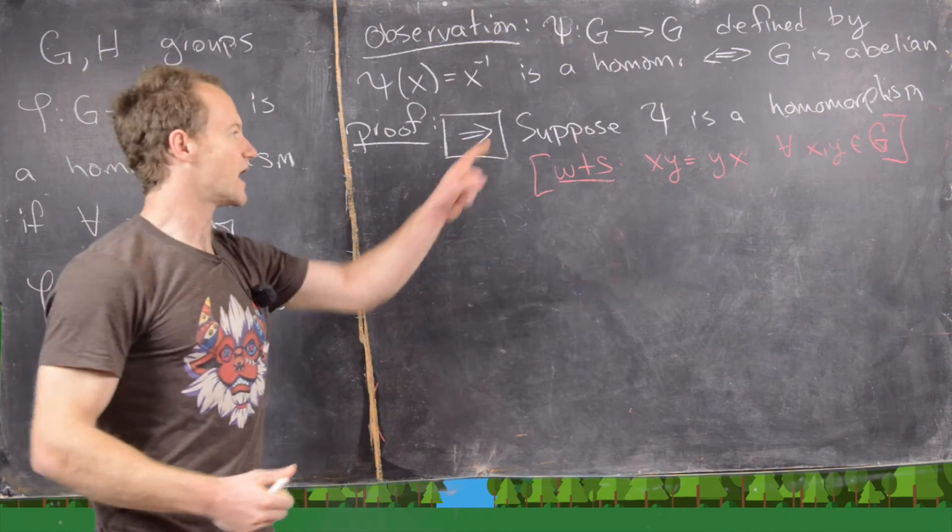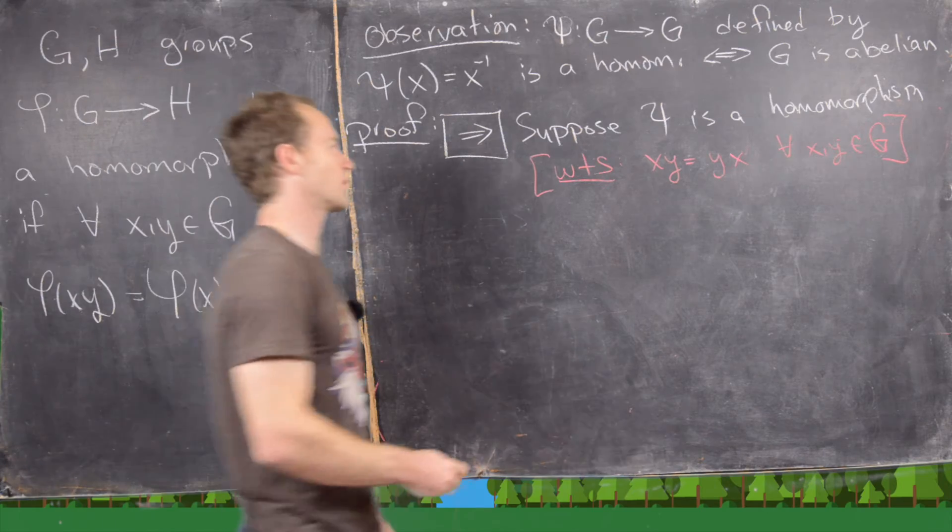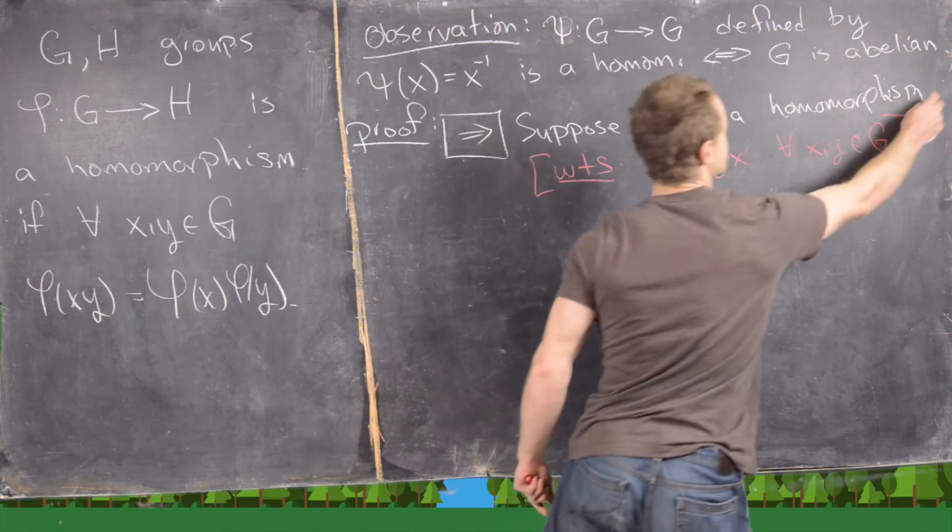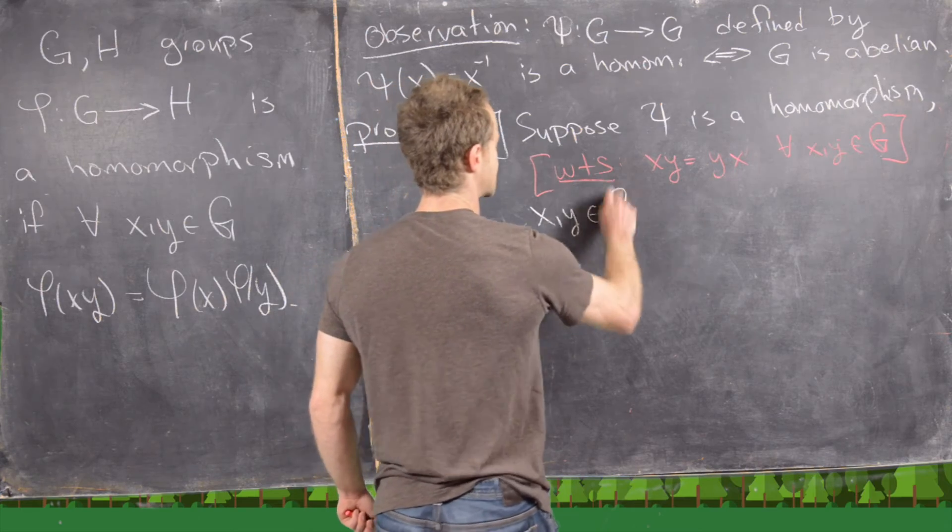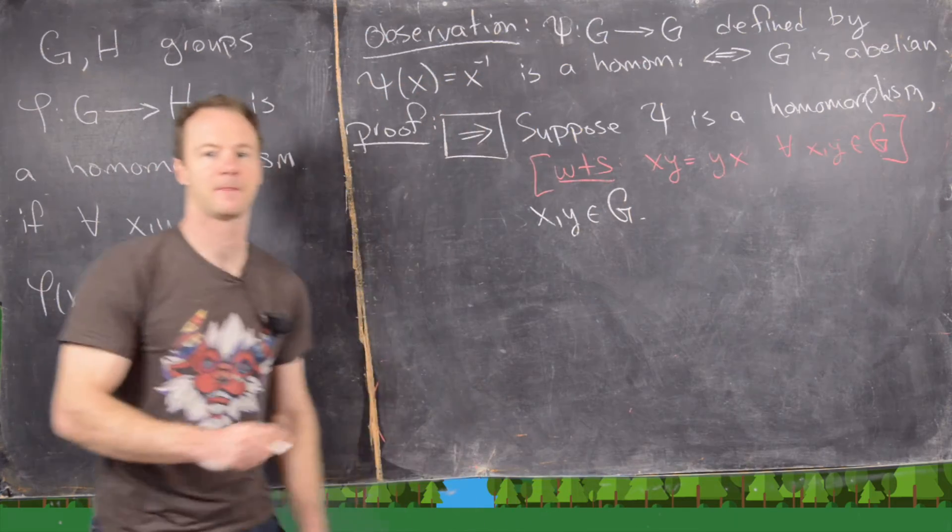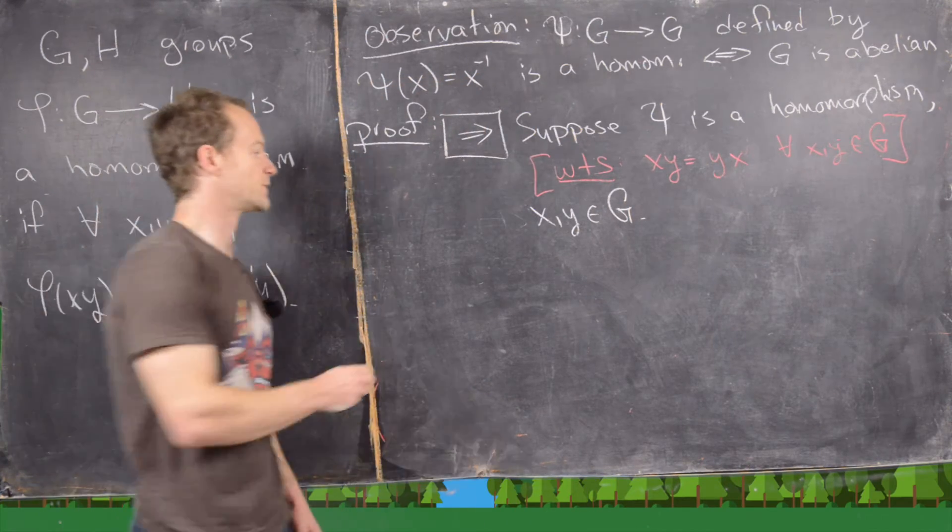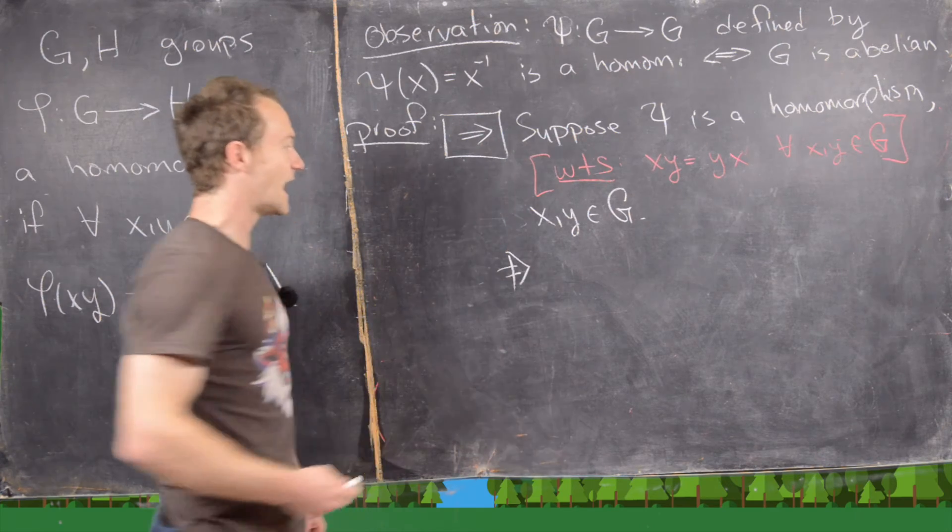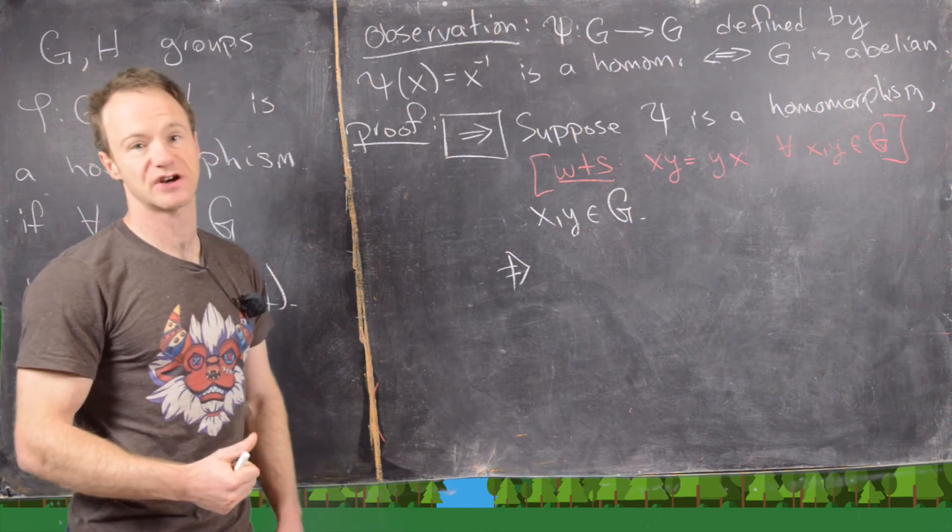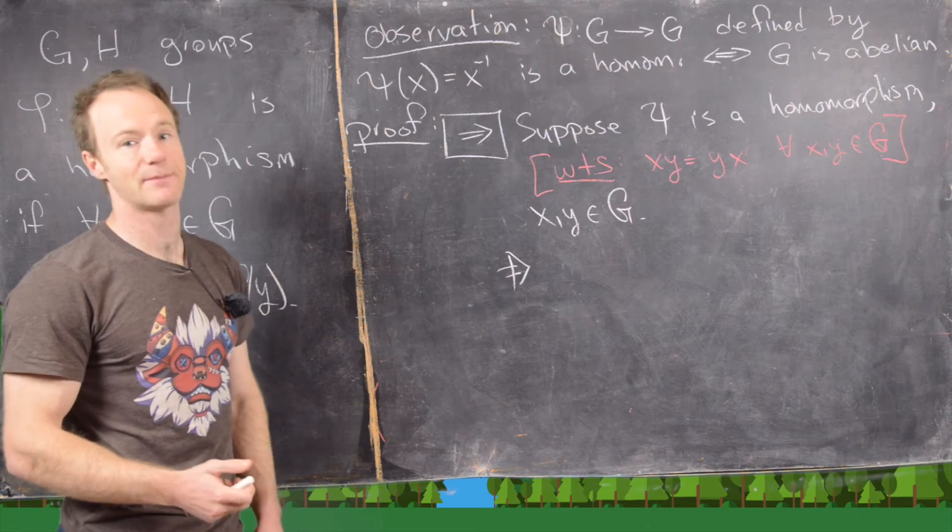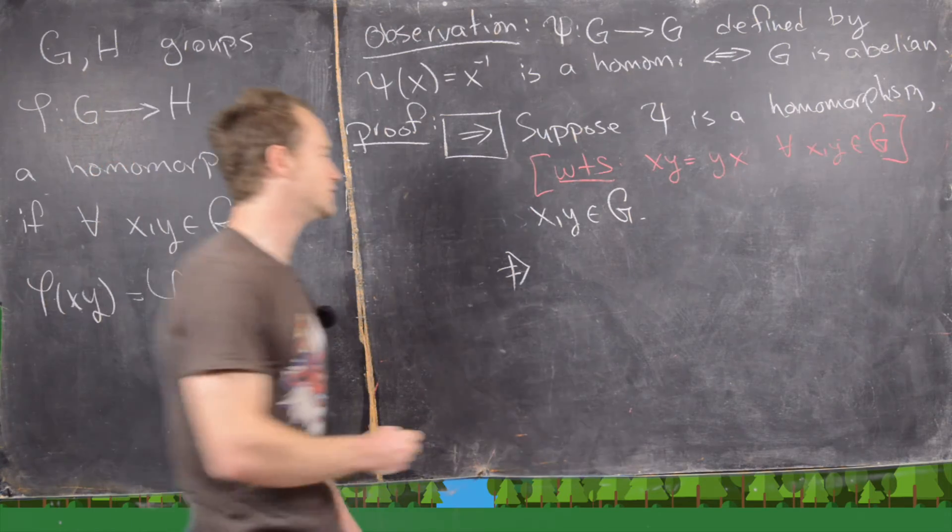So that means we're not only going to assume that psi is a homomorphism, but then we're also going to take two elements, x and y, from the group. But now we only have one piece of information at this point, and that is that this map is a homomorphism. So let's use that fact.